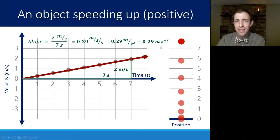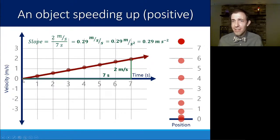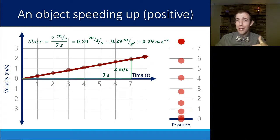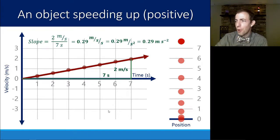This number tells you how much faster you're moving every second. At zero seconds you're not moving at all — zero meters per second — but one second later you'd be moving at 0.29 meters per second, and another second after that you've increased by another 0.29. So slope of displacement-time gave us velocity in meters divided by seconds, and slope of velocity versus time gives us meters per second divided by seconds, which is acceleration.